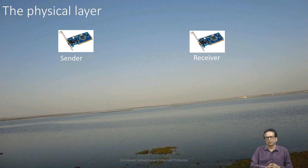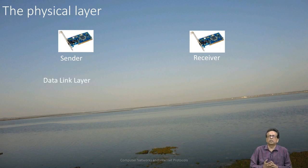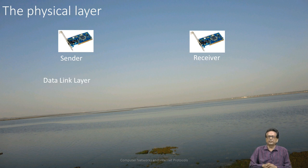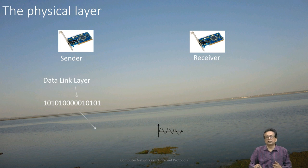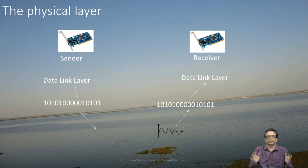Now let us talk about each layer in turn. We start with the physical layer and try to see what its job is. Both the physical and data link layers reside on interface cards. The physical layer receives bits from the data link layer, converts them into some form of signals, and sends those signals to the receiver. At the receiver, the physical layer converts the signals back to bits and gives them to the data link layer. Basically, the job of the physical layer is to carry bits across in the form of signals.